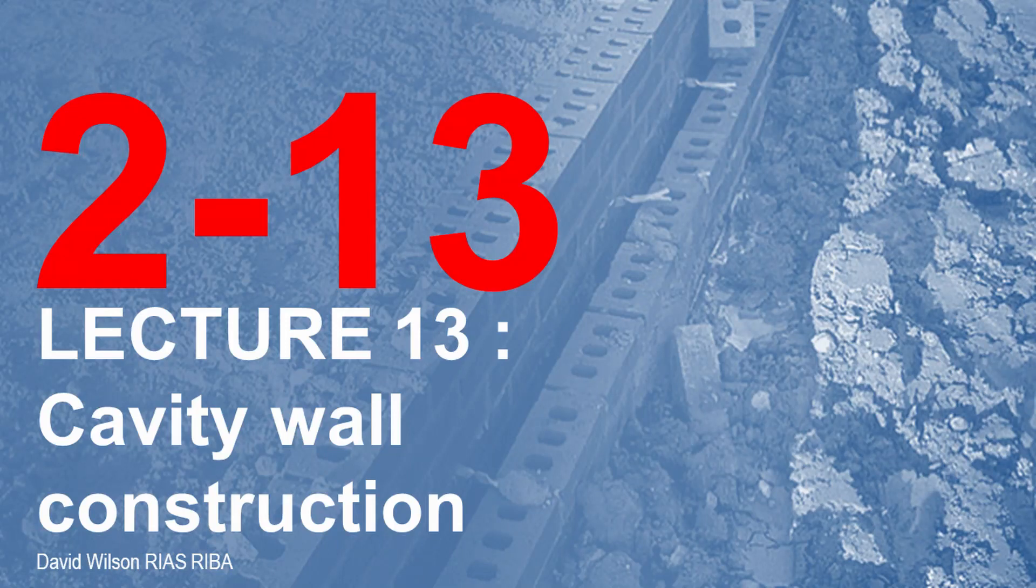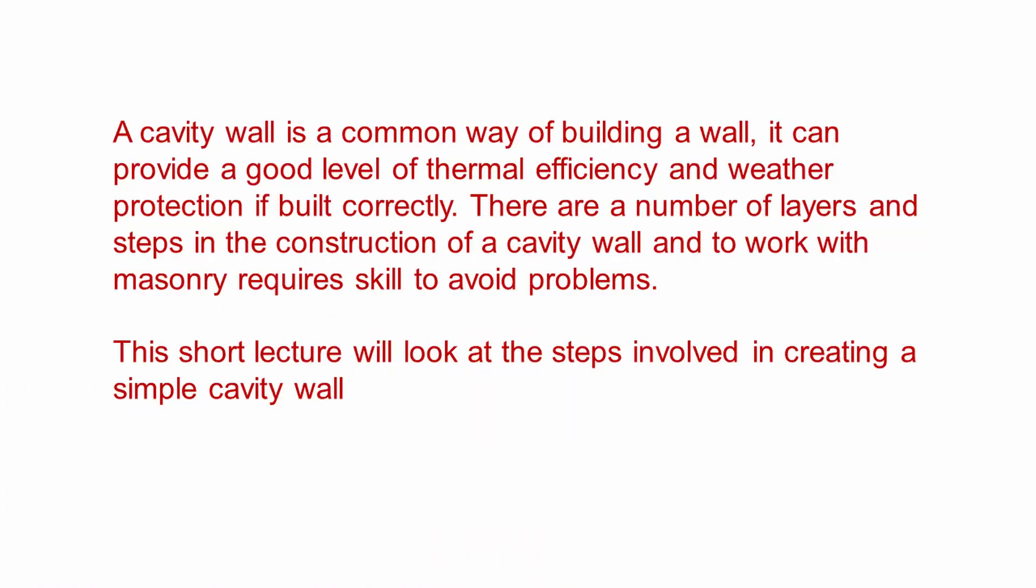Hello and welcome to lecture 13, the series on cavity wall construction. A cavity wall is a common way of building a wall for a domestic property and can provide a good level of thermal efficiency and weather protection if built correctly. Because there are a number of layers and steps in the construction of a cavity wall, it's important that these things are installed in the correct order and that we use care and skill to avoid any problems. This short lecture is going to look at the steps involved in creating a simple cavity wall and some of the products that are required.